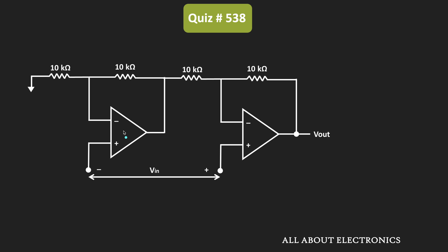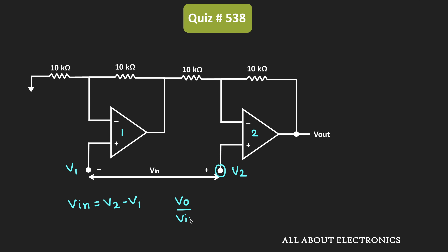First, let's label this as op-amp no.1 and this as op-amp no.2. If you observe the given circuit, this input voltage appears between the non-inverting terminals of op-amp no.2 and op-amp no.1. Let's say the voltage at one end is V1 and the voltage at the other node is V2. That means Vin is equal to V2 minus V1, and the voltage gain Vout divided by Vin equals Vout divided by V2 minus V1 — this is what we need to find.